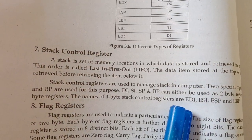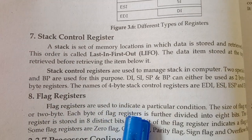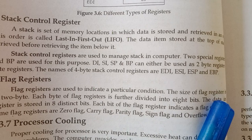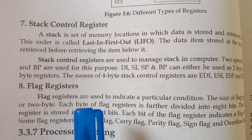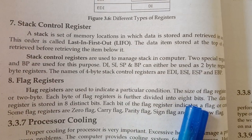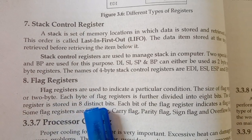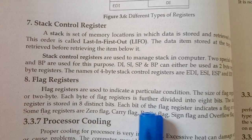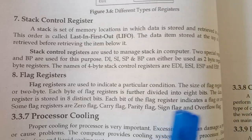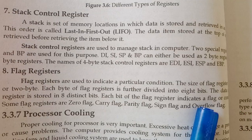The flag register is used to indicate particular conditions of the processor. The size of the flag register is two bytes, and each byte is further divided into eight bits. The data stored in the flag register indicates conditions such as zero, carry, parity, and sign flags.